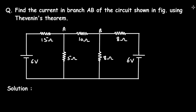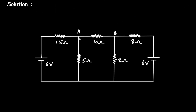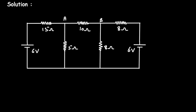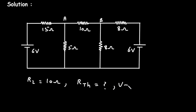Solution. First of all, we know that the value of RL here is equal to 10 ohm. Now, we need the value of RTH, that is Thevenin's resistance, and also we need the value of VTH, which is the Thevenin's voltage. From this, we can draw the Thevenin equivalent circuit.